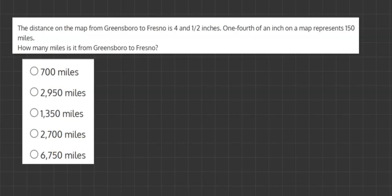The distance on the map from Greensboro to Fresno is four and a half inches. One fourth of an inch on the map represents 150 miles. How many miles is it from Greensboro to Fresno?